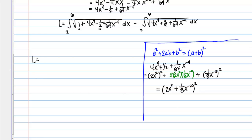So then let's get back to our integral using what we just discovered. So underneath the square root, then I'm going to write this as quantity 2X squared plus 1/8 X to the negative 2 squared and DX. So now what we have is we have the square root of something squared. So we can reduce that and what we'll end up with is actually the absolute value of this expression here. So I've got the absolute value of 2X squared plus 1/8 X to the negative 2 DX, still between 2 and 6.